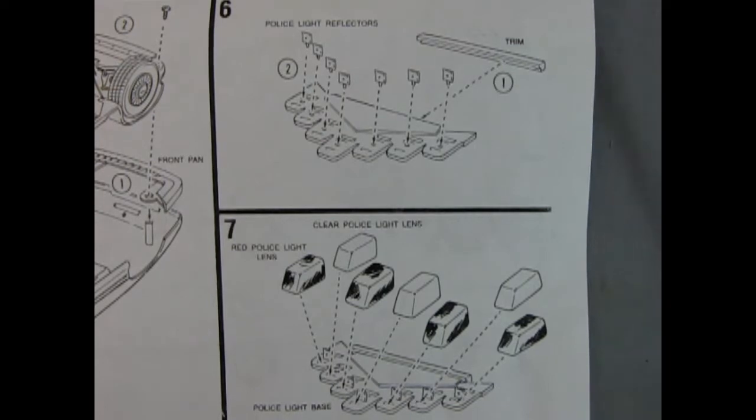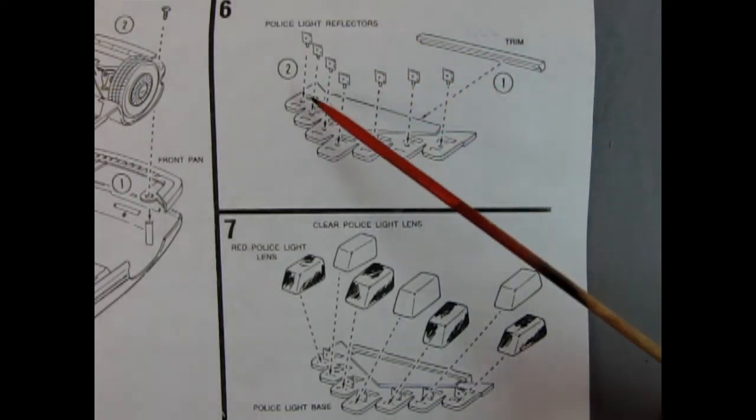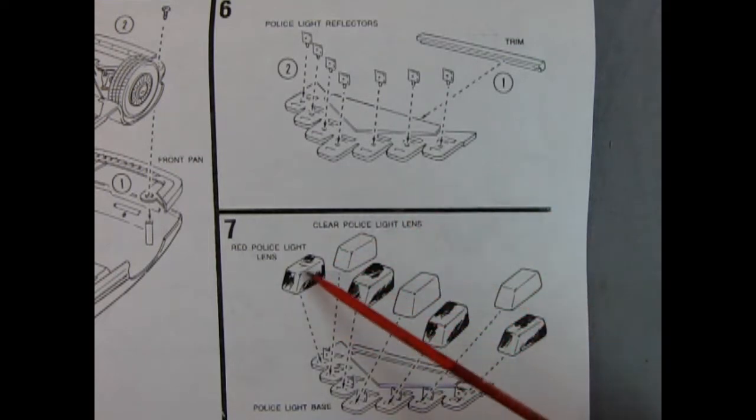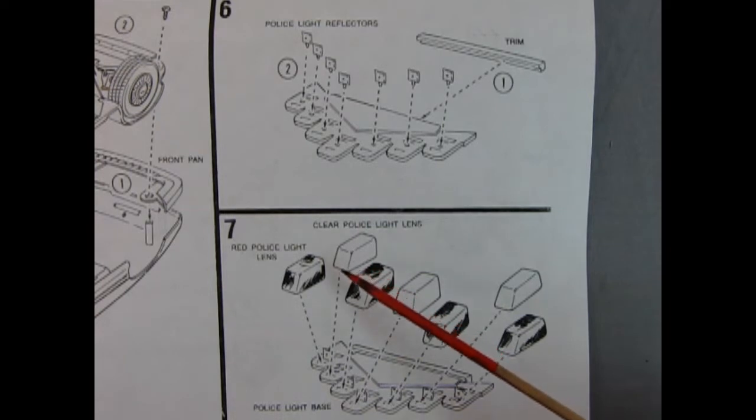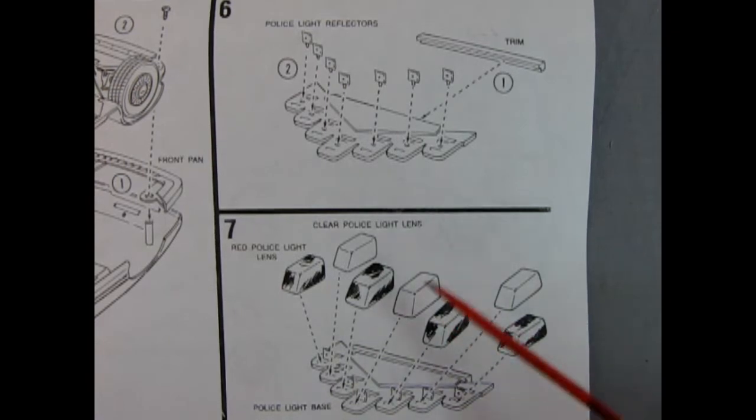In panel six we get the police light reflectors gluing down onto this base and there's a piece of trim which goes on the back. Then in step seven we get all the little dome lights going on the top. It has a police light lens here and here. I think they're different colors, so we'll take a look when Trevor shows us the clear parts.